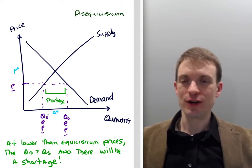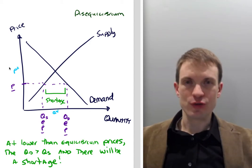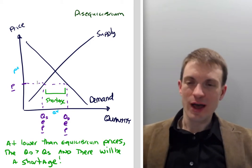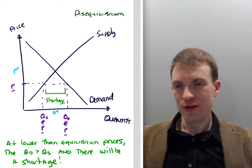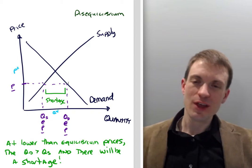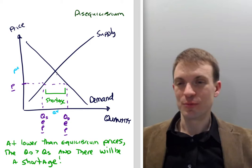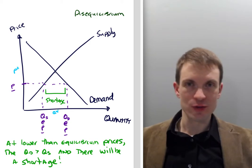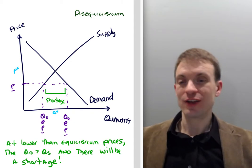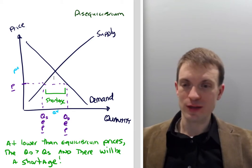To alleviate this shortage, the price needs to rise. As the price rises, quantity supplied increases because higher prices are better for suppliers, while quantity demanded falls as buyers are discouraged, until we reach equilibrium — where the quantity demanded by buyers is exactly satisfied by the quantity supplied brought to market by sellers.